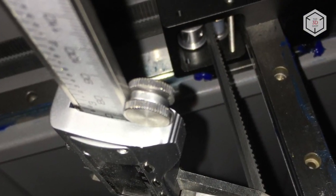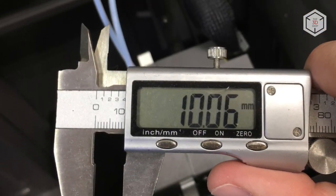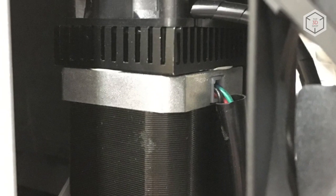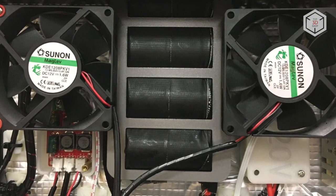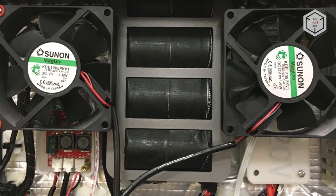The X and Y axis belts are 10 millimeters wide. The stepper motors are also air-cooled to prevent overheating. The printer contains capacitors that allow the machine to resume printing after a power failure.